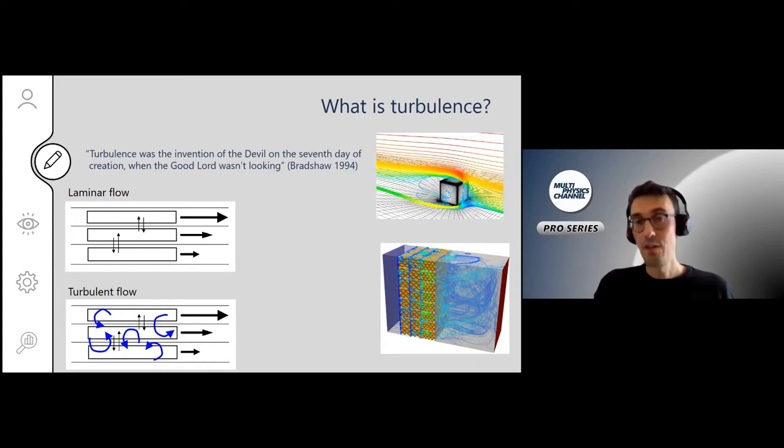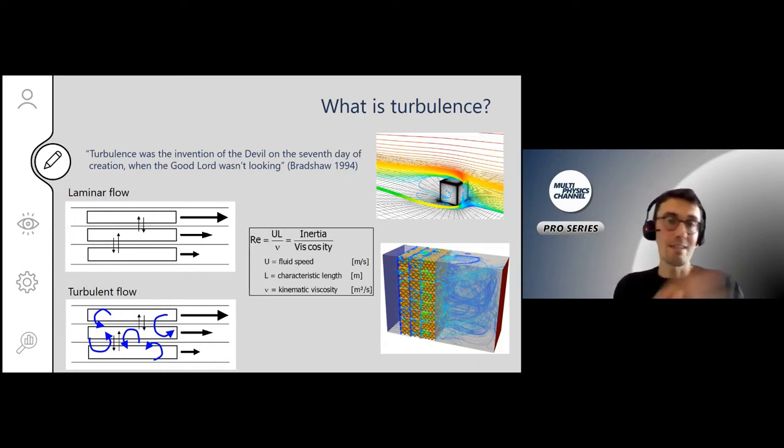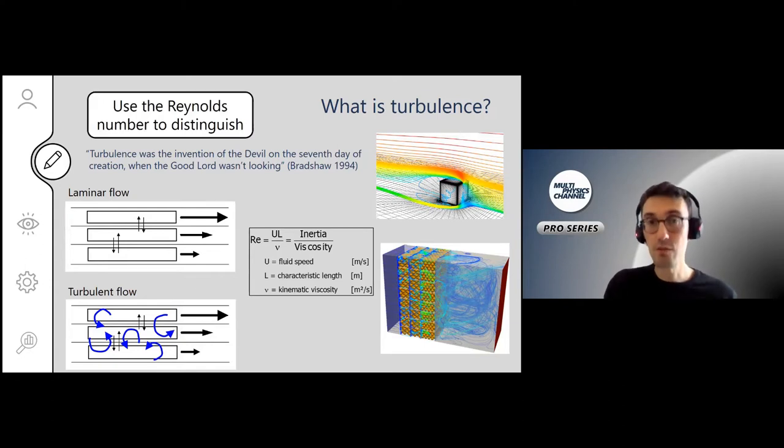A key criterion to identify if you have laminar or turbulent flow is to calculate the Reynolds number. Please, for all the problems you look at, do so. If you actually have laminar flow, don't bother trying to model turbulence—it's not relevant.